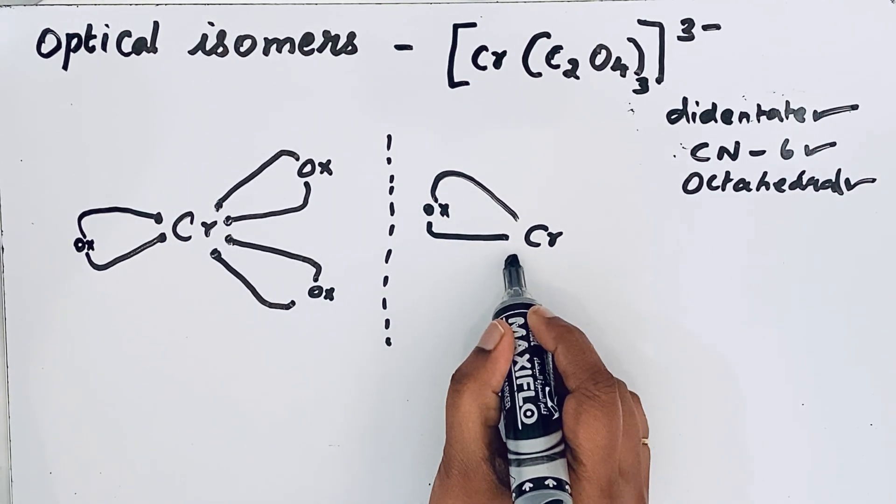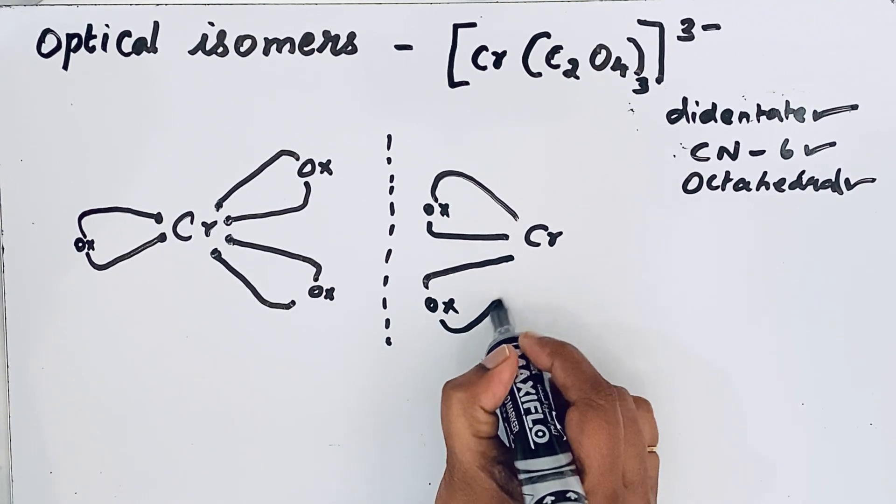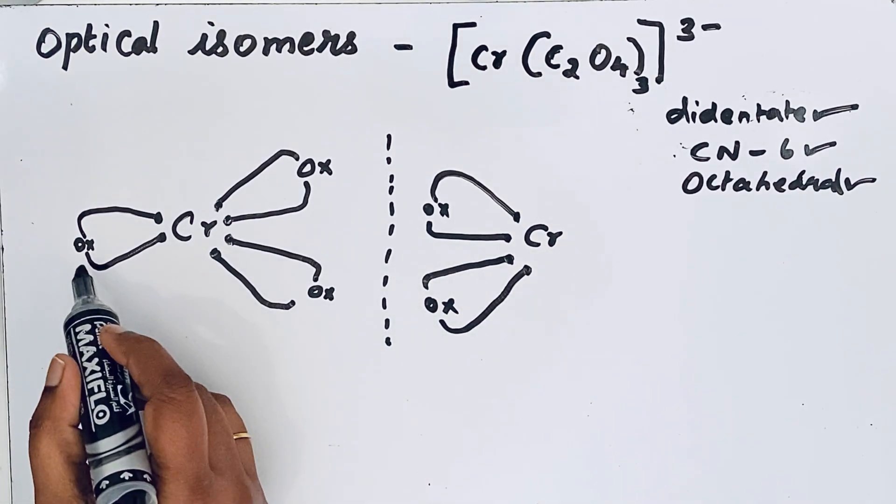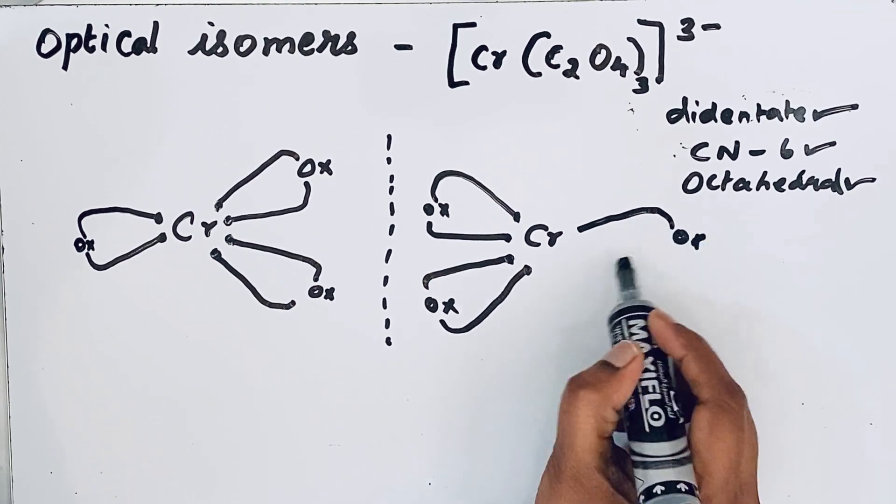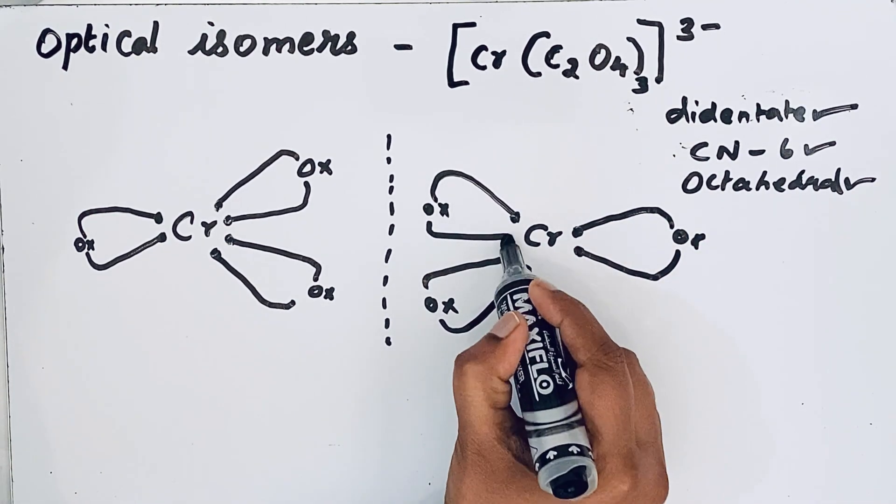Then another OX also. We go to draw that. Then we have one more OX to this side. So totally six donor atoms.